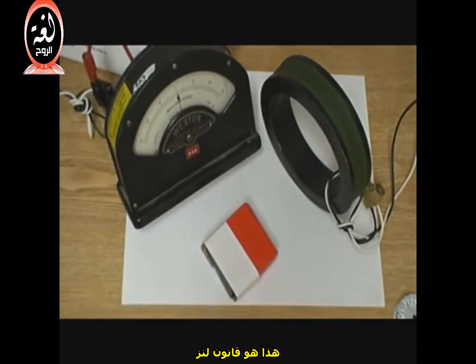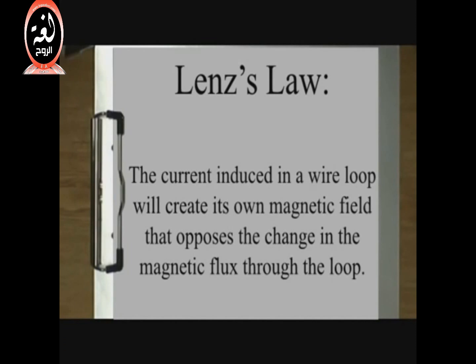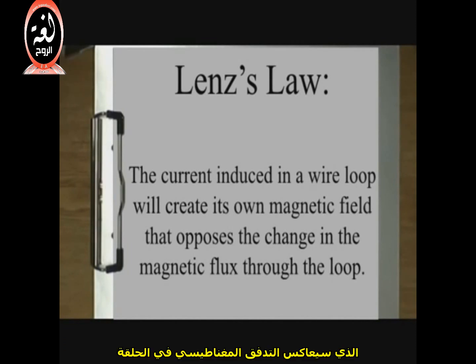That is Lenz's Law. Lenz's Law states that the current induced in a wire loop will create its own magnetic field that opposes the change in magnetic flux through the loop.